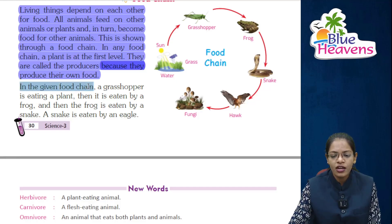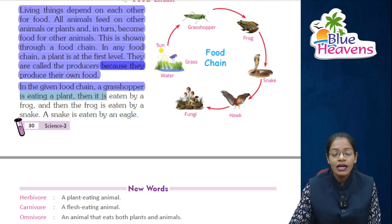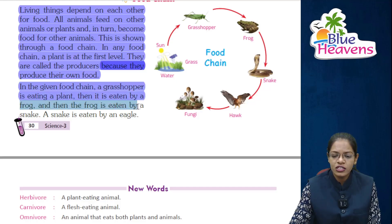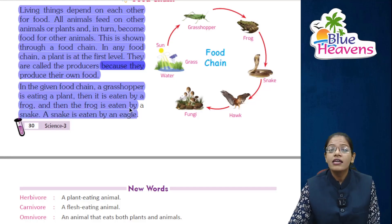In the given food chain: grass is eaten by a grasshopper, then the grasshopper is eaten by a frog, the frog is eaten by a snake, and the snake is eaten by an eagle.